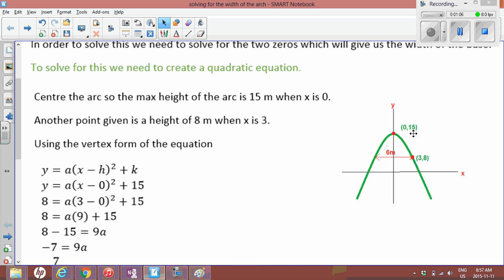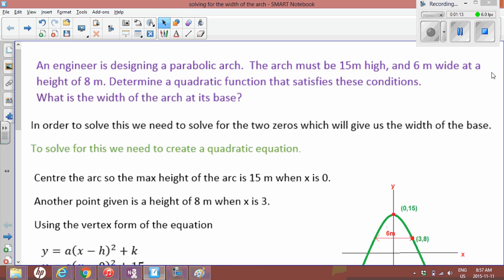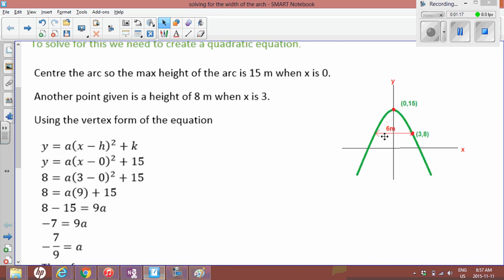They've also told us at the width of 6 meters the height is 8. So since we've centered it we know that half of 6 is 3 and the height there is going to be 8. So that's another point that we have on our graph, on our quadratic.